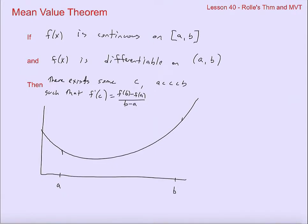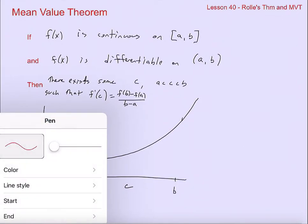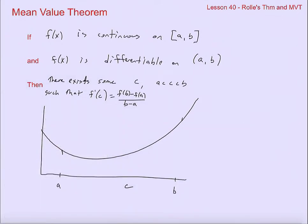Let's just read this carefully again. As long as you have a function that is continuous on a closed interval and differentiable on an open interval, which is a normal function, then there must be some point somewhere in between a and b. I don't know where, but somewhere in here there's a point c such that the derivative at c is the same exact thing as the difference quotient from a to b. And I should point out when we say 'some c' — quick little note — I should really rephrase that as 'at least one,' because there certainly could be more than one.